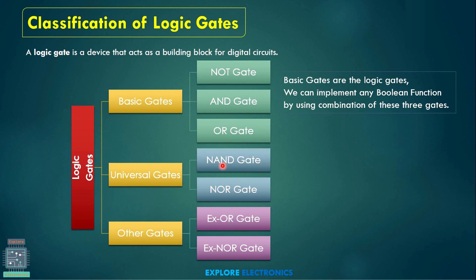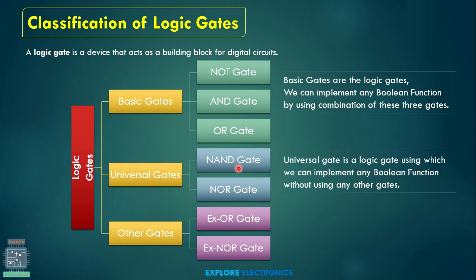Why are the NAND gate and NOR gate called universal? By using only NAND gates we can construct any digital circuit, or implement any boolean function. That's why these two are called universal. While implementing using universal gates, no other gates are required. The XOR gate and XNOR gate are called derived gates because these two gates are derived from OR gates.